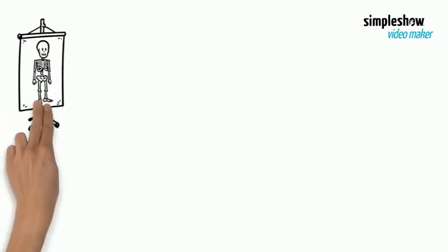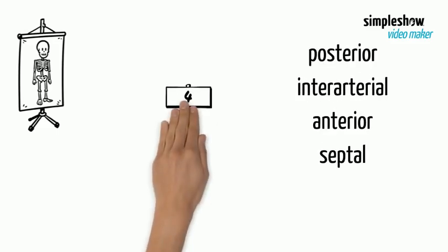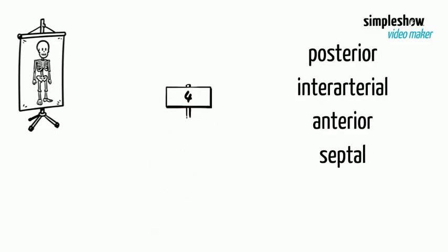Depending on the anatomic relationship of the anomalous vessel to the aorta and the pulmonary trunk, the anomaly can be classified into four common courses: posterior, interarterial, anterior, and septal course.